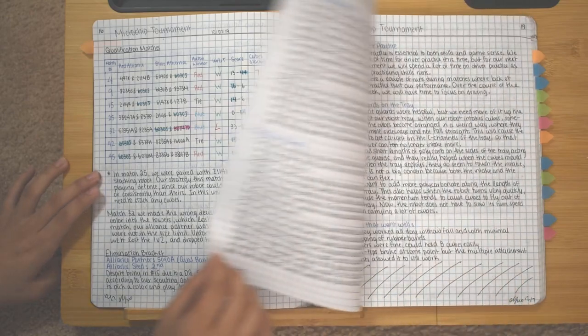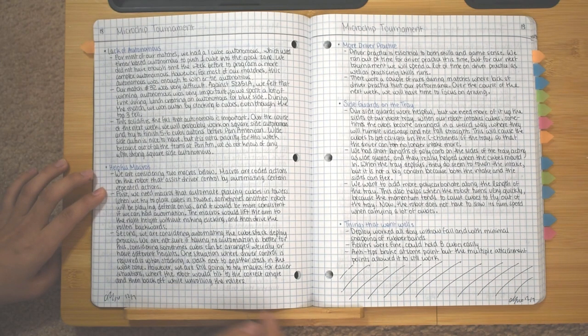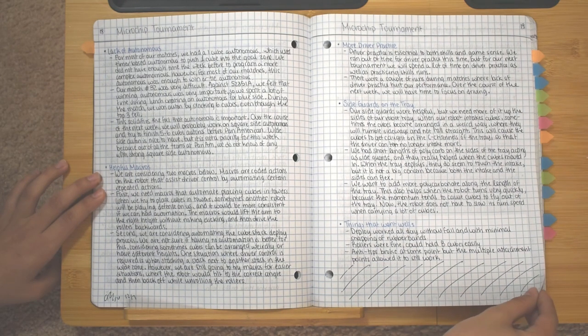Finally, we have the longest section, the discussion and analysis section. This section is where we talk about the major recurring problems we had during the tournament and how we plan on addressing those problems in the future.